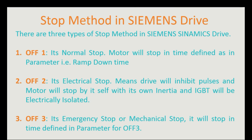There are three types of stop methods available in the Siemens SINAMICS drive: OFF1, OFF2, and OFF3. Our first question is why we need three types of stop. When we connect different loads with the motor, in case of some emergency we need to electrically isolate the motor or drive — that is where we use OFF2. To prevent mechanical damage to the system, we use the emergency stop or mechanical stop, which is OFF3.